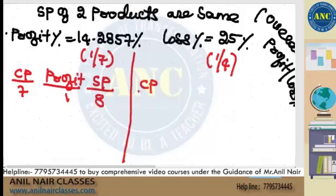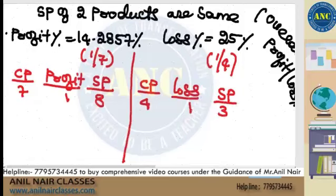Loss is 1 by 4. Cost price is 4. Loss is 1. Selling price is 3. I hope it is clear.